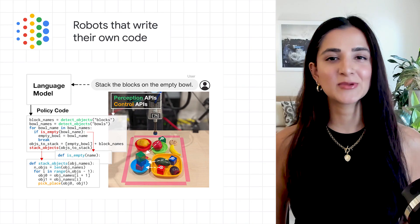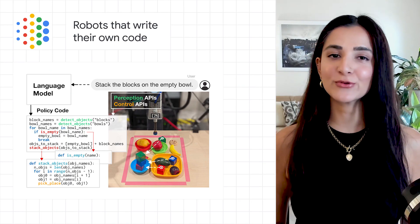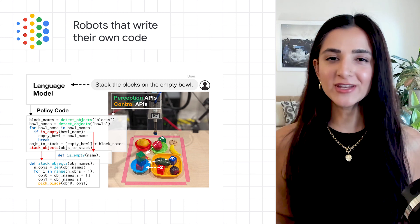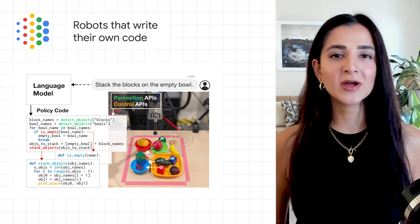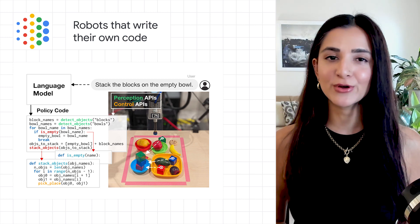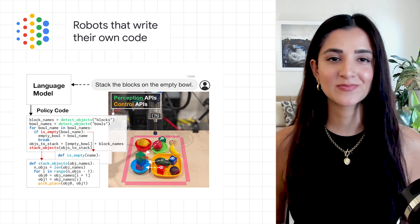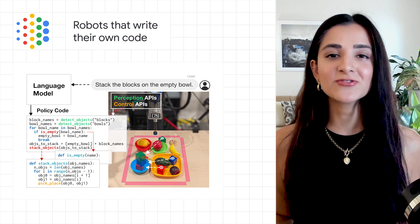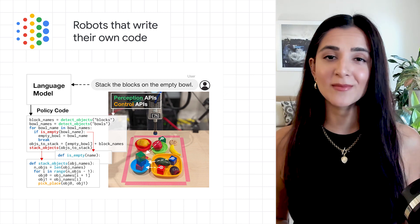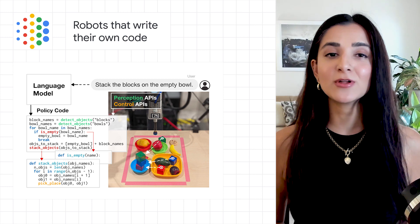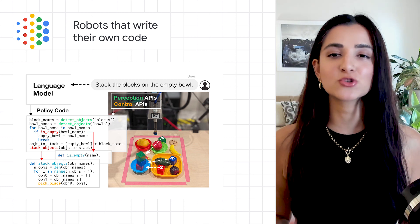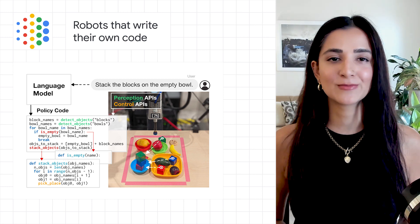More AI news this week comes from the Google research team. What if when given instructions from people, robots could autonomously write their own code to interact with the world? It turns out that the latest generation of language models such as PaLM are capable of complex reasoning and have also been trained on millions of lines of code.